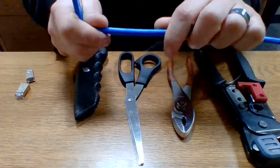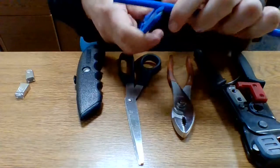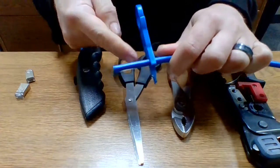Alright, so this is how you do Cat 6 shielded. You got a stripper here. Put it on the first rung.